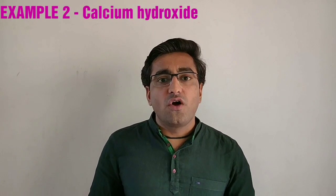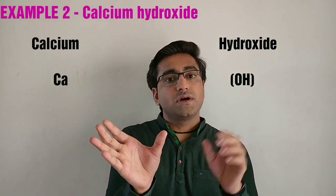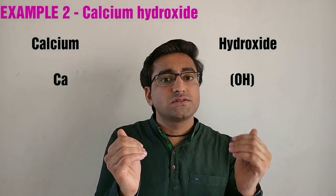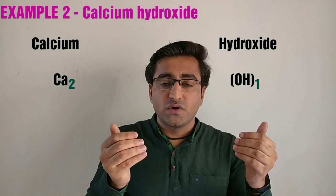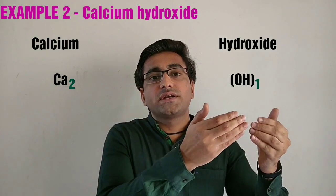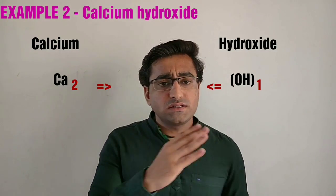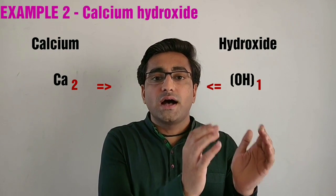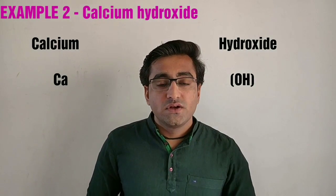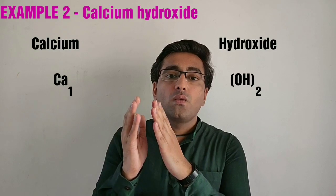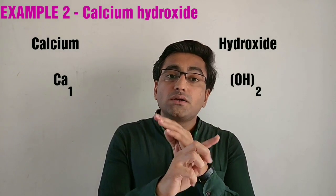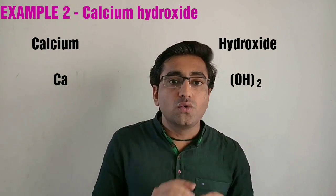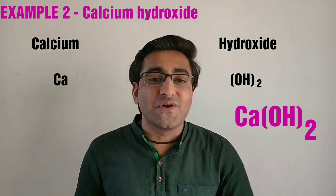Let us take an example of Calcium Hydroxide. Step one: Calcium's symbol is Ca, Hydroxide's symbol is OH. Step two: write their valencies — Calcium's valency is 2, Hydroxide's valency is 1. Step three: criss-cross. But keep in mind that OH (hydroxide) is a polyatomic ion, so we place it in a bracket. We get Ca(OH)₂, which is the formula for Calcium Hydroxide.